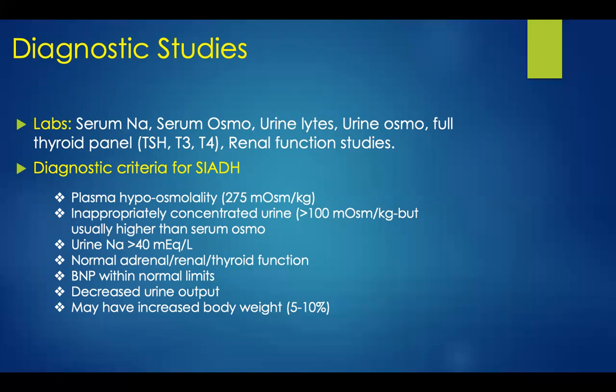Diagnostic criteria for SIADH include plasma hypoosmolality — less than 275 milliosmoles per kilogram — inappropriately concentrated urine greater than 100 milliosmoles per kilogram, typically higher than serum osmolarity, and a urine sodium greater than 40 milliequivalents per liter. Normal adrenal, renal, and thyroid function is expected. The BMP is usually within normal limits. There is notable decreased urine output compared to intake, and patients may have increased body weight of 5 to 10 percent.